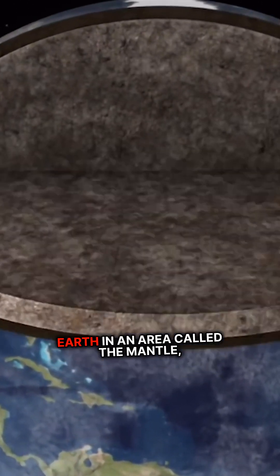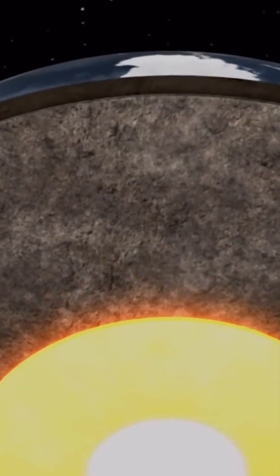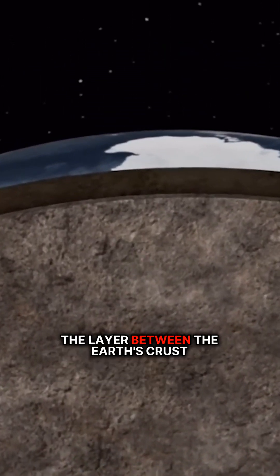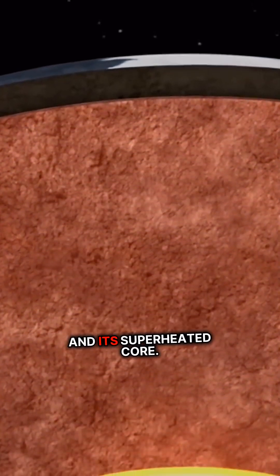Diamonds form deep within the Earth in an area called the mantle, the layer between the Earth's crust and its superheated core.